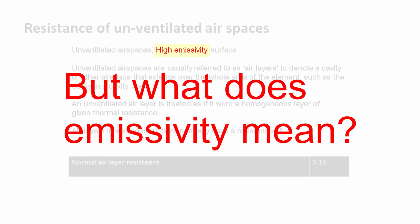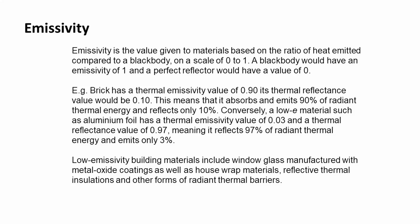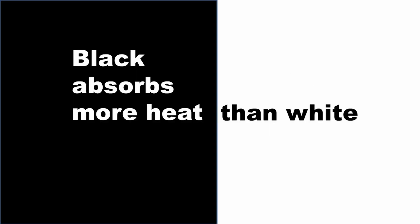There are a couple of terms that need explaining. Emissivity can be thought of simply as the difference between black and white. It's the value given to materials based on the ratio of heat emitted compared to a black body, on a scale of 0 to 1. A perfect black surface would have an emissivity of 1 and a perfect reflector a value of 0. In construction, materials like brick don't reflect, while materials such as aluminium foil do reflect. Low-E materials make our construction more efficient.